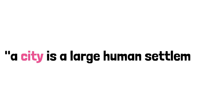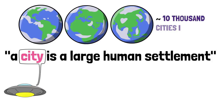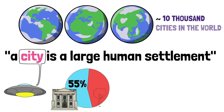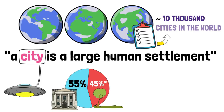A city is a large human settlement — and that description from Wikipedia kind of sounds like the way an alien would describe it. There are around 10,000 cities in the world, which for some reason seems like not that much, but they house 55% of the world's population. Countries vary in the way they define cities; some say any settlement with over 1,500 people is a city, others demand higher population numbers for it to be considered as such.